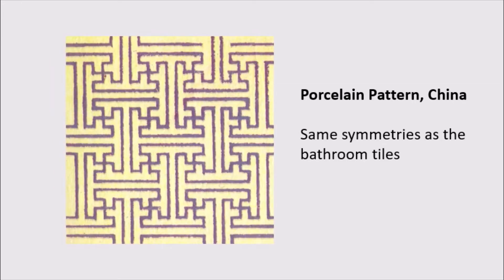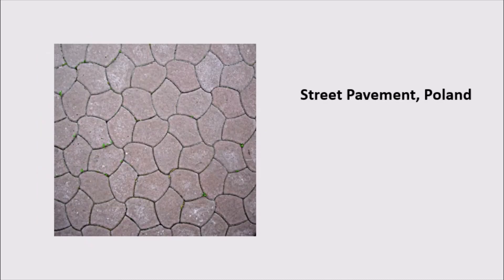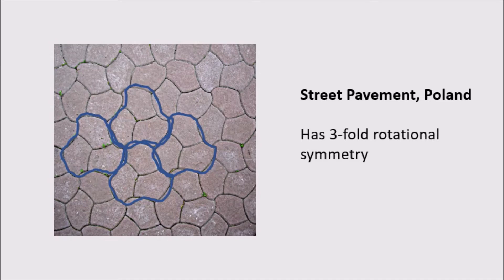If we want to be a bit fancier, we can actually notice that this porcelain pattern from China has the same symmetries as the bathroom tiles. These tiles from the Alhambra are a little bit different. In all the examples we've looked at so far, the symmetries have been square in a sense, where the rotations have been fourfold or there's no rotations at all. But in this Alhambra tiling, we can actually find a threefold rotational symmetry, where we have a 120 degree rotation which leaves the tiles the same. And these tiles from the street pavement in Poland have the same symmetries as the Alhambra tiling, where it has threefold rotational symmetry.